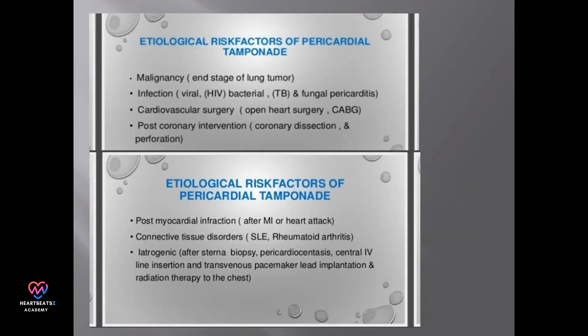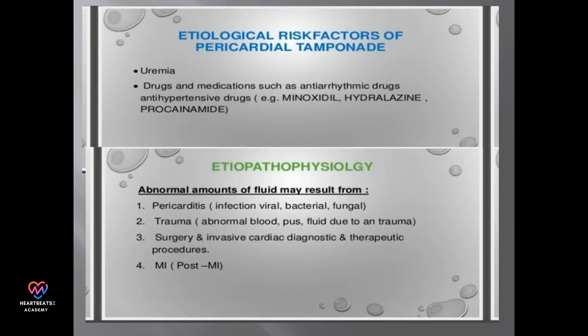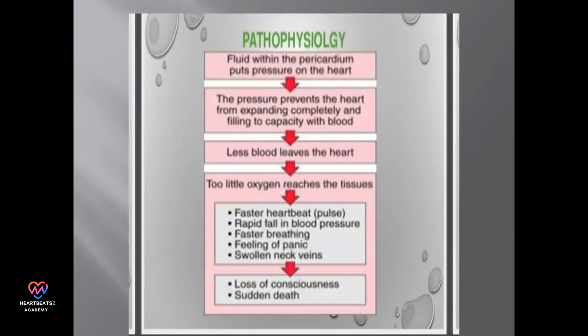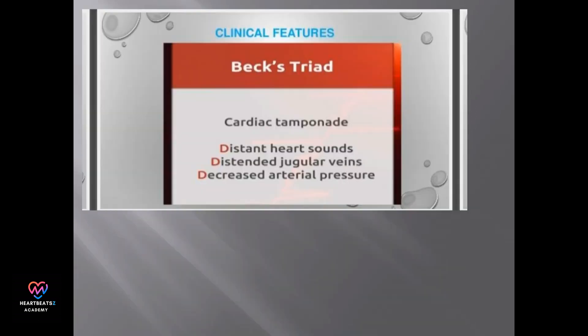Several risk factors contribute to pericardial tamponade, including malignancy, infection, and cardiovascular surgery. The pathophysiology involves fluid pressure on the heart, preventing it from expanding and filling with blood.